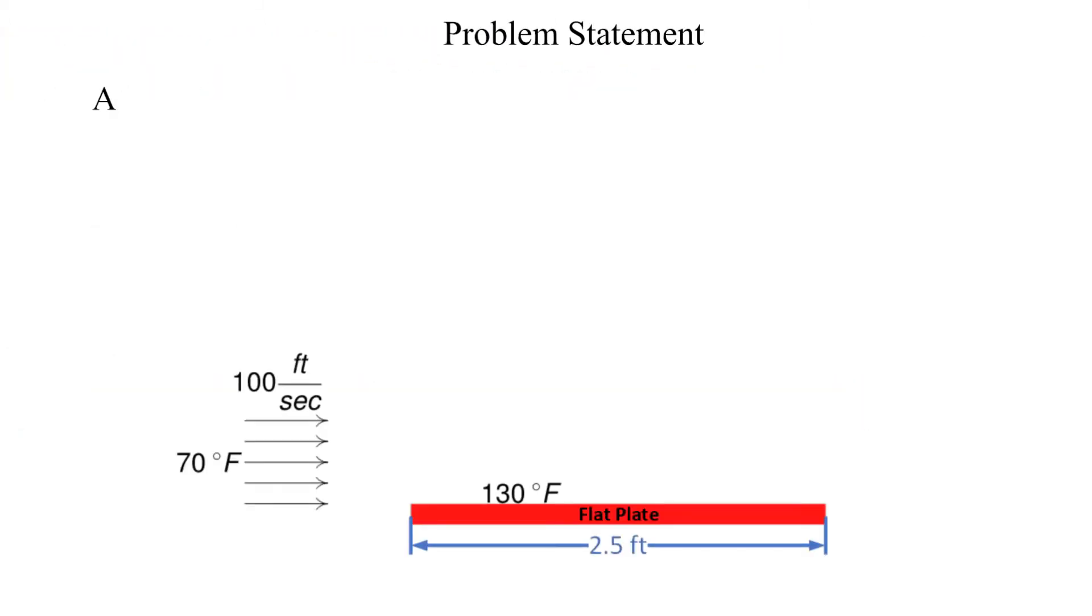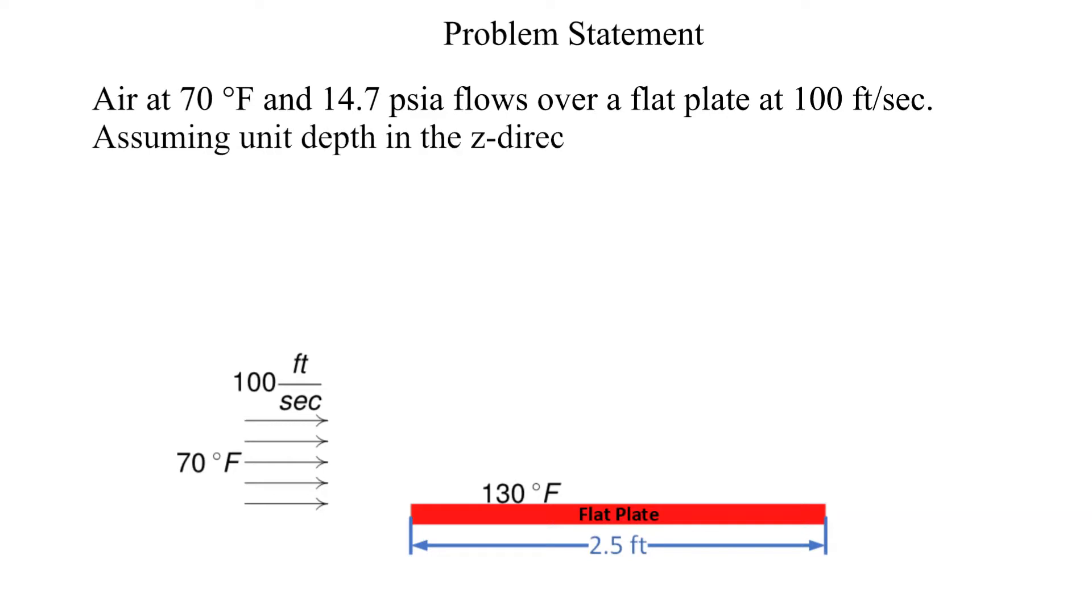Air at 70 degrees Fahrenheit at 14.7 PSIA flows over a flat plate at 100 feet per second. Assuming unit depth in the Z direction, calculate the heat transfer from the plate.